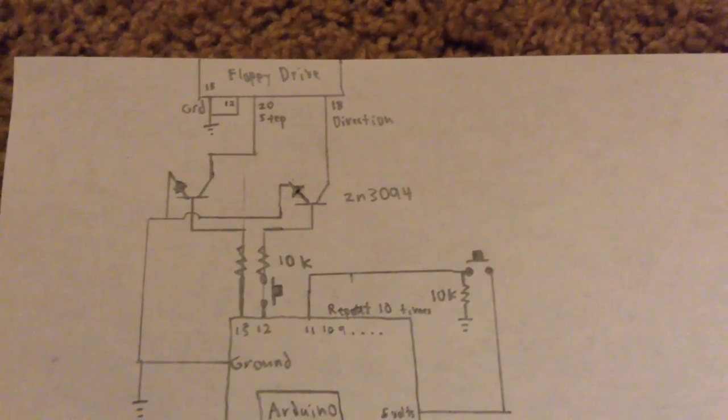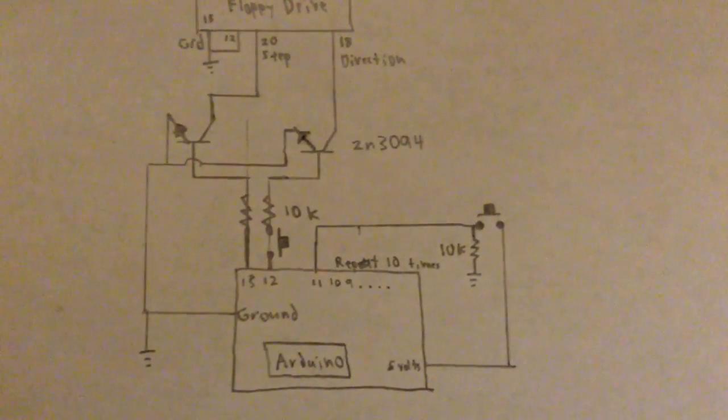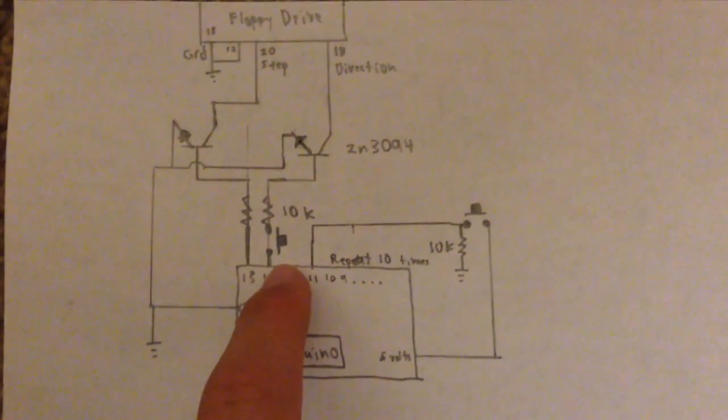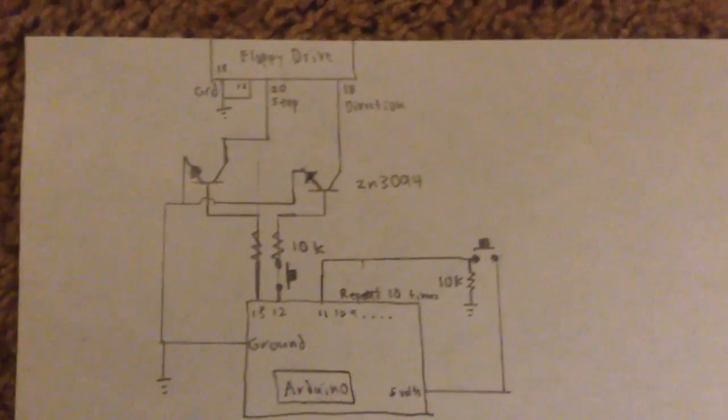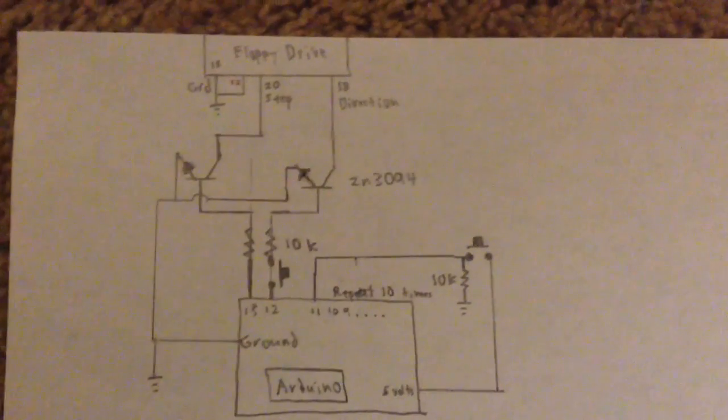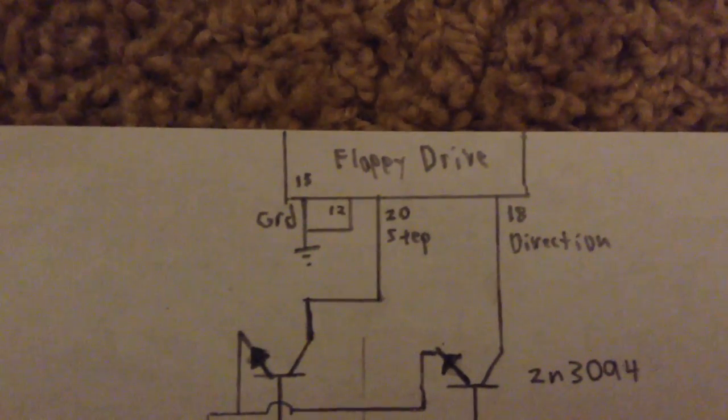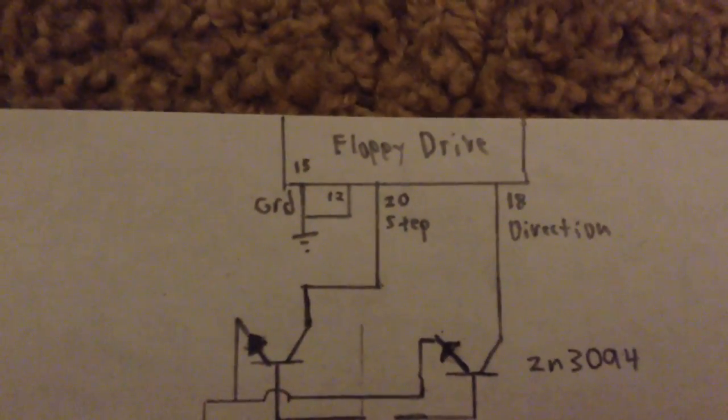I have the step pin and the direction pin. After I was finished with this whole design, I added a push button in between the resistor and the Arduino that controls the direction of the floppy drive. I will explain this reason later in the video. Pin 12 and the ground of the floppy drive were connected because pin 12 turns on the floppy drive.